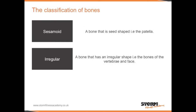Sesamoid bones are bones that are seed-shaped, such as the patella. Irregular bones are bones that have an irregular shape, such as bones of the vertebrae and the face.